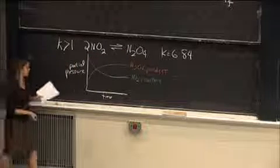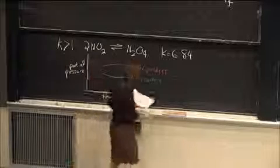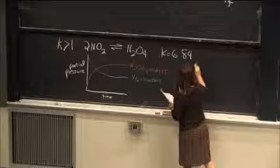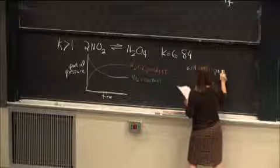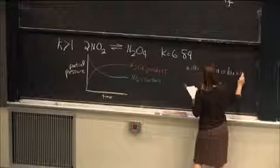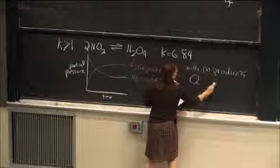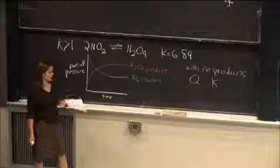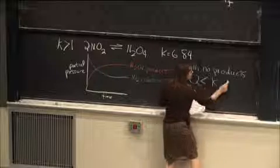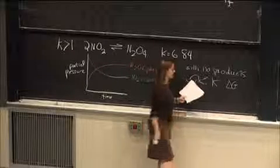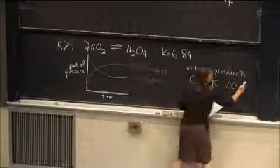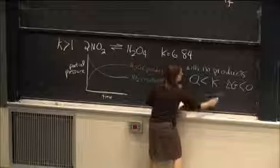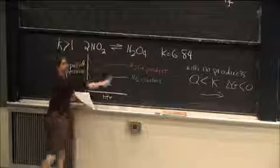So initially, what is true about Q and K? So with no products, what is true about Q and K? Q is less than K, and so what's true about delta G? Less than zero, be negative, so be spontaneous in the forward direction. So you're going to be spontaneous in the forward direction and you're going to make your product.